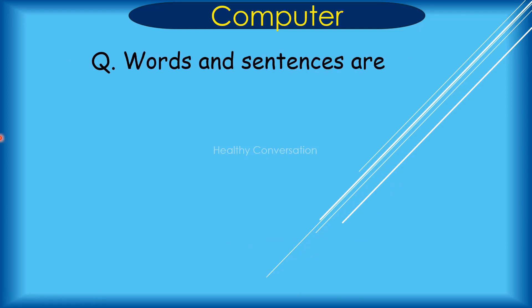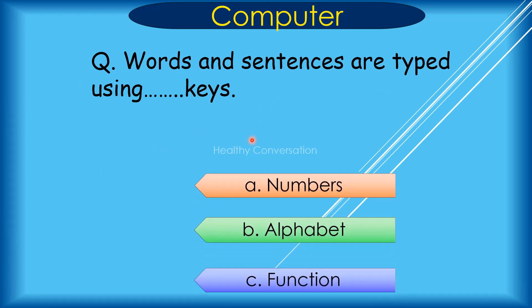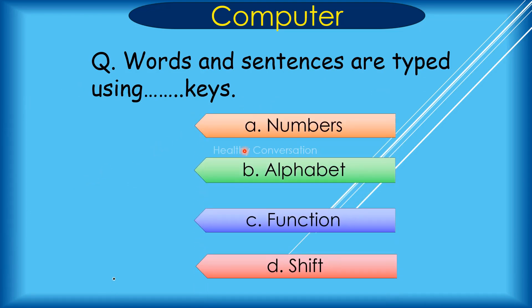Question: What sentences are typed using dash keys? A. Numbers, B. Alphabet, C. Function, D. Shift. Correct answer is B. Alphabet.